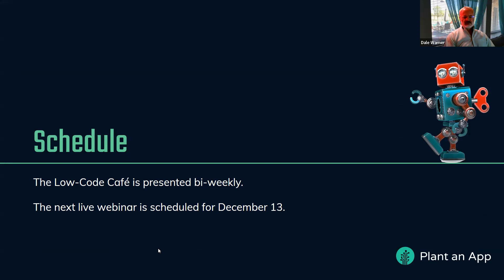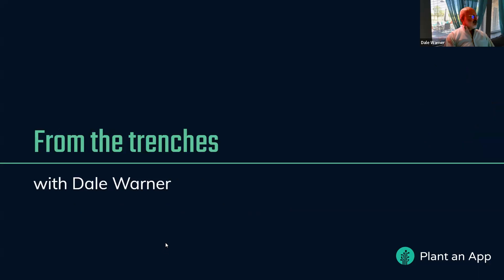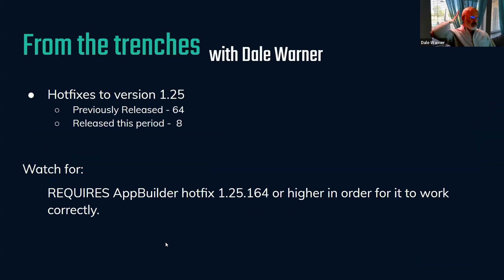We're going to have the next Low-Code Cafe webinar on December 13th, and we've tentatively scheduled an end-of-year special for December 20th. We'll talk more about our schedule next time. Let's dive right in — From the Trenches of Support. We have a number of hotfixes that have already been released. Our current version is version 1.25, and we've released 64 hotfixes to various parts and pieces of the application, and we're releasing eight more in these last two weeks.